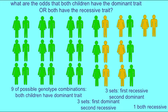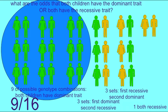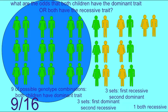If a pair of carriers for a Mendelian recessive trait have two children, and one were to ask what are the odds that either both would have the dominant trait or both would have the recessive trait, one would add the probability that both would have the dominant trait, which would be 9 sixteenths.